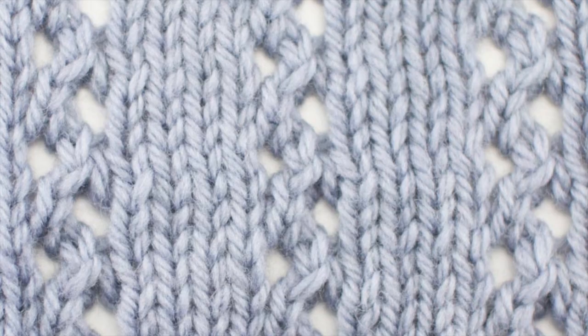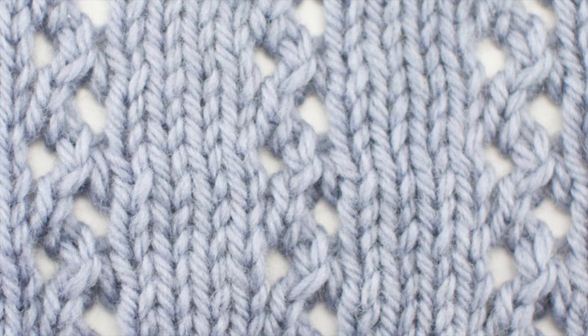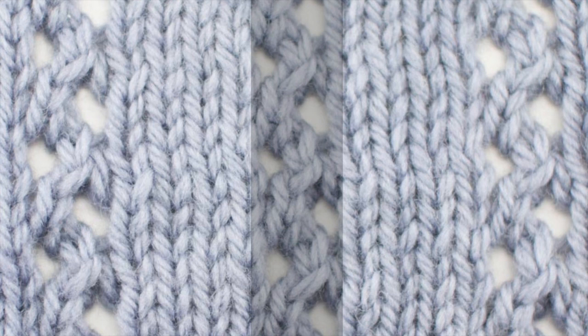The problem is this doesn't actually look like this. What we want is to border these two rows of stitches or two columns of stitches with some stitches on either side, like these.